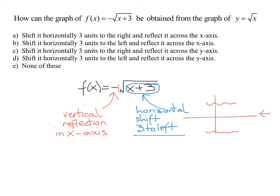And remember, you always do the horizontal shifting left and right first. Therefore, I'm going to do the vertical reflection second. So we are going to have a horizontal shift 3 to the left and a vertical reflection in the x axis. So all we have to do is go find our answer.